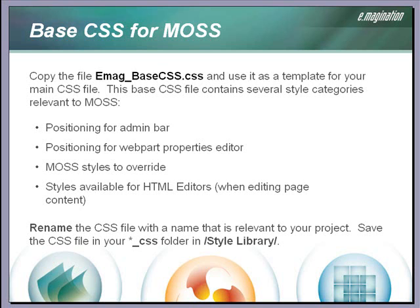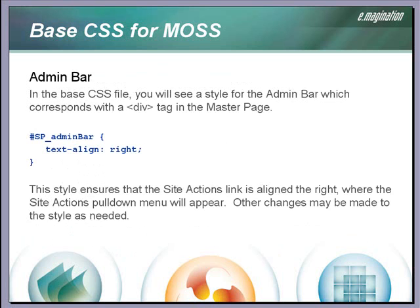Let's review some of the styles that are included in the base CSS file. These classes and IDs have already been applied to the appropriate elements in the base master page. The admin bar includes the side actions menu and page editing feature. In our base master page, we have moved the admin bar outside of its comfort zone, so to speak. So we had to include a style in our base CSS file to tweak where the side actions link will appear in the page.